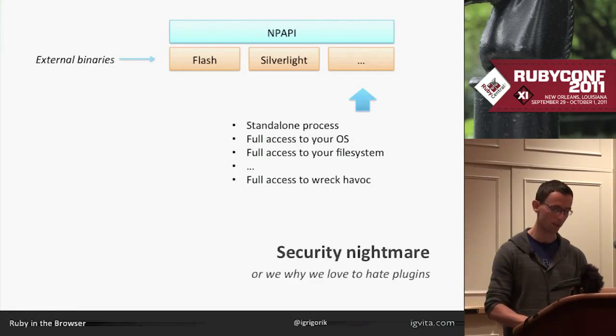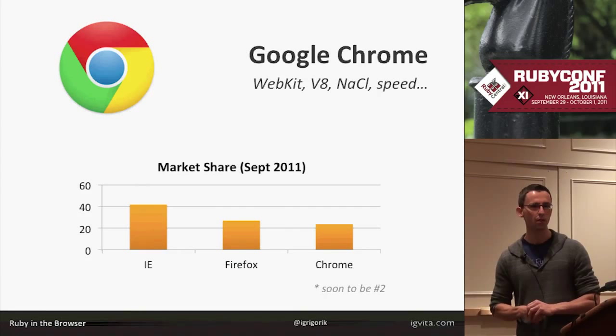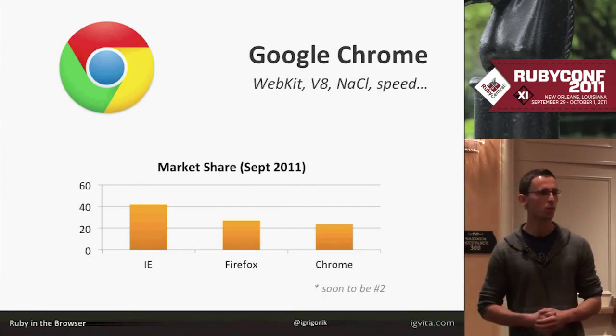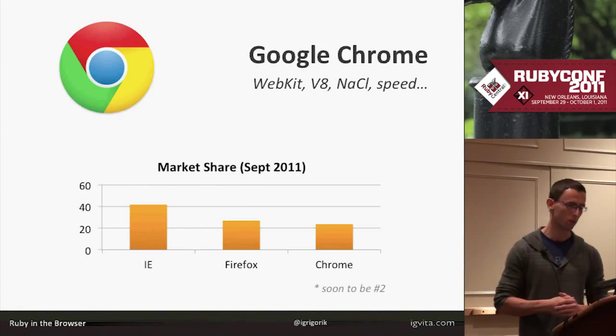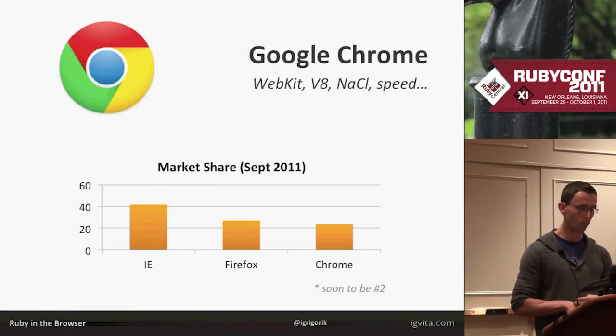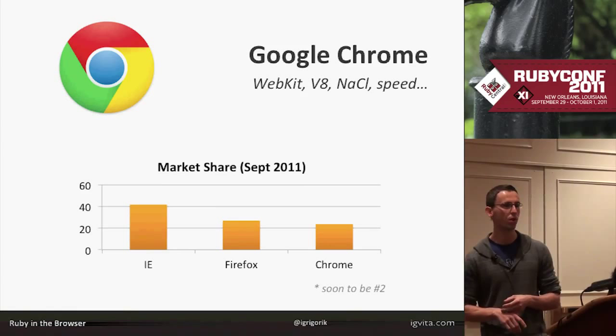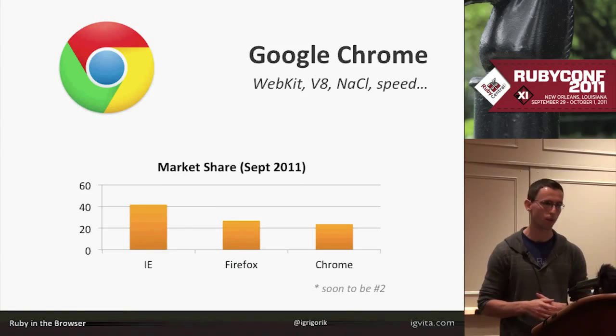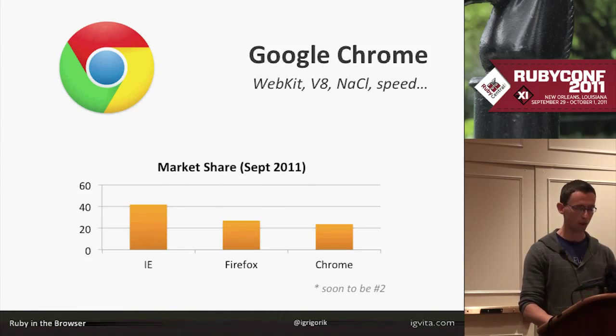Then Google Chrome comes along. The innovation they did was: every tab is going to be a standalone process. Instead of having one process with many tabs, every single tab is isolated. This gives you some nice things - everybody has their own security sandbox, so if something goes wrong in one tab it won't affect anything else. We can just kill that one tab and everything's great. IE and Firefox are both losing market share. As of September, Chrome is around 26% across the internet and growing. Within a month or two they'll actually be the second browser on the web, which is pretty amazing.